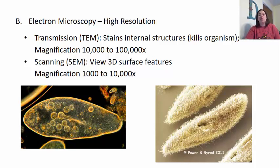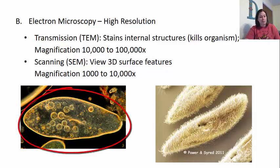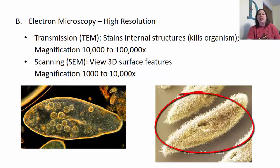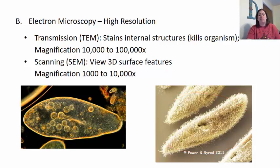Looking at these two pictures, the bottom one with the black background is for the transmission electron microscope, which lets you see internal structures. The scanning electron microscope over here allows you to look more at the 3D shape and 3D structures that are present.